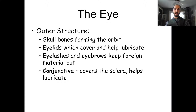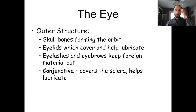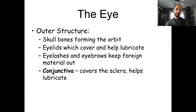The eye: basic outer structure has the skull bones forming your orbit. You have an eyelid which covers your eye, and it also helps lubricate the eye so it doesn't dry out — letting the eye dry out causes a lot of damage.